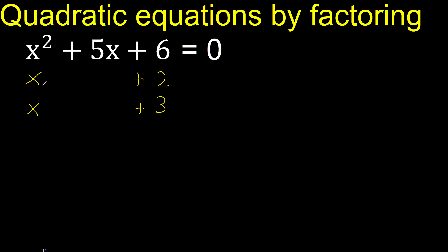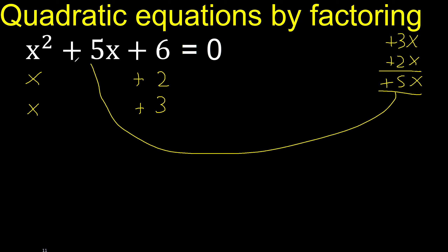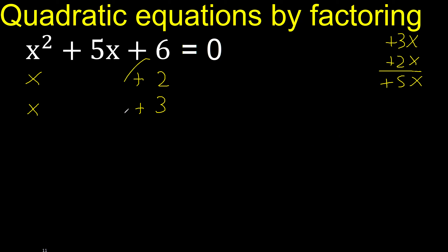Let's analyze if it is correct. x multiplied by 3 here, now x multiplied by 2 — that is 5, giving 5x. Therefore it is correct.